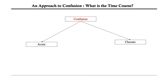Firstly, we should ask ourselves: what is the time course? Is this an acute change from the patient's baseline? Is this acute or is this chronic? Once you've identified whether the confusion is acute or chronic, we can then explore the approach to each time course.